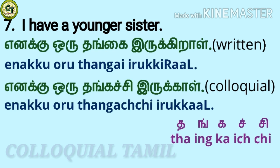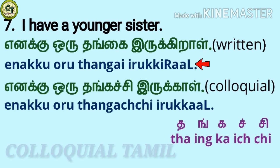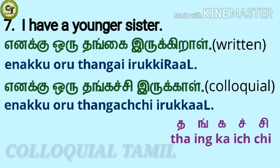To say 'I have a younger sister' — 'Ena kkoru Thangai Irikiraal.' Replace the consonant R at the end of 'Irikiraar' with consonant L — 'Ena koru Thangga Irukkiraal.' The colloquial form is 'Ena koru Thangga chi Irukka.' For 'Thangga chi': A, short vowel — Ng, consonant — K, short vowel — H, consonant — Chi, short vowel. Together: Thangga chi. Note: while speaking, the L at the end of 'Irukkaal' doesn't sound clearly — it sounds like 'Irukka.'